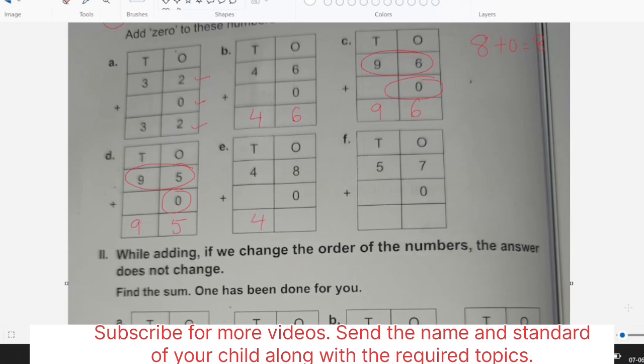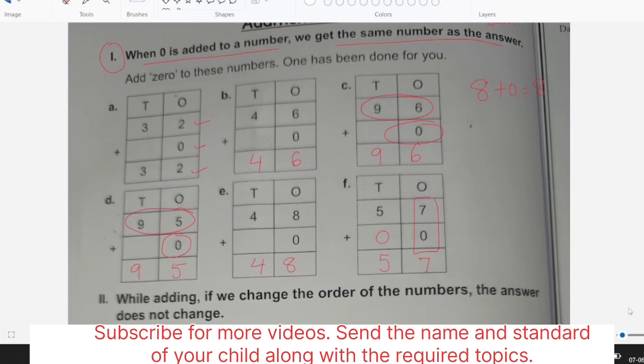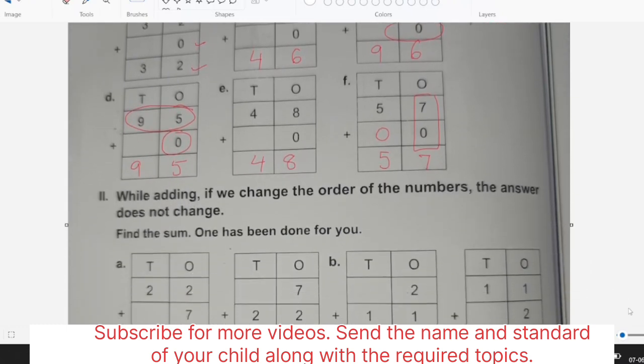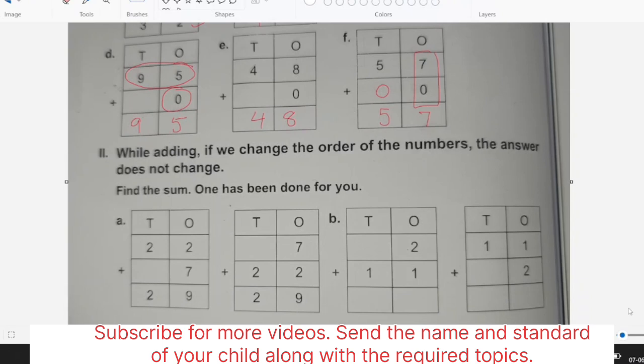Child can check that this is the first number 96 and we are adding zero to it so answer will be 96 only. Okay. Similarly 95 plus zero is 95, 48 plus zero is 48, and child can add it individually also. 7 plus 0 is 7 and 5 here when we don't have any number that is considered as 0, so it is 5 plus 0 which is 5, it is 57.